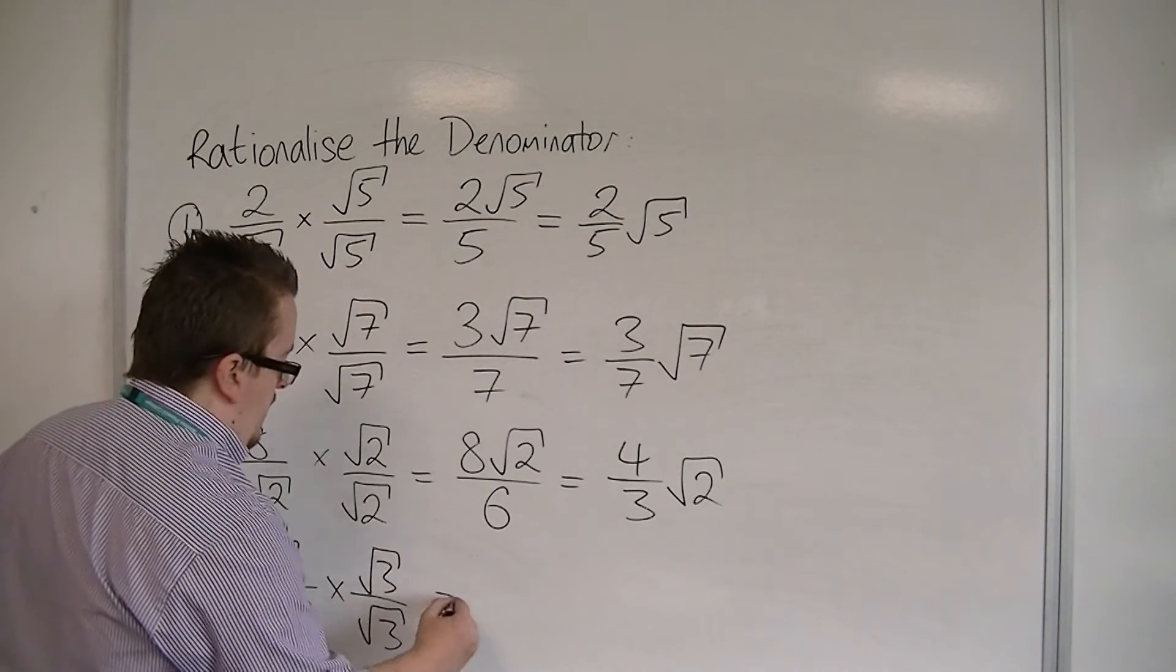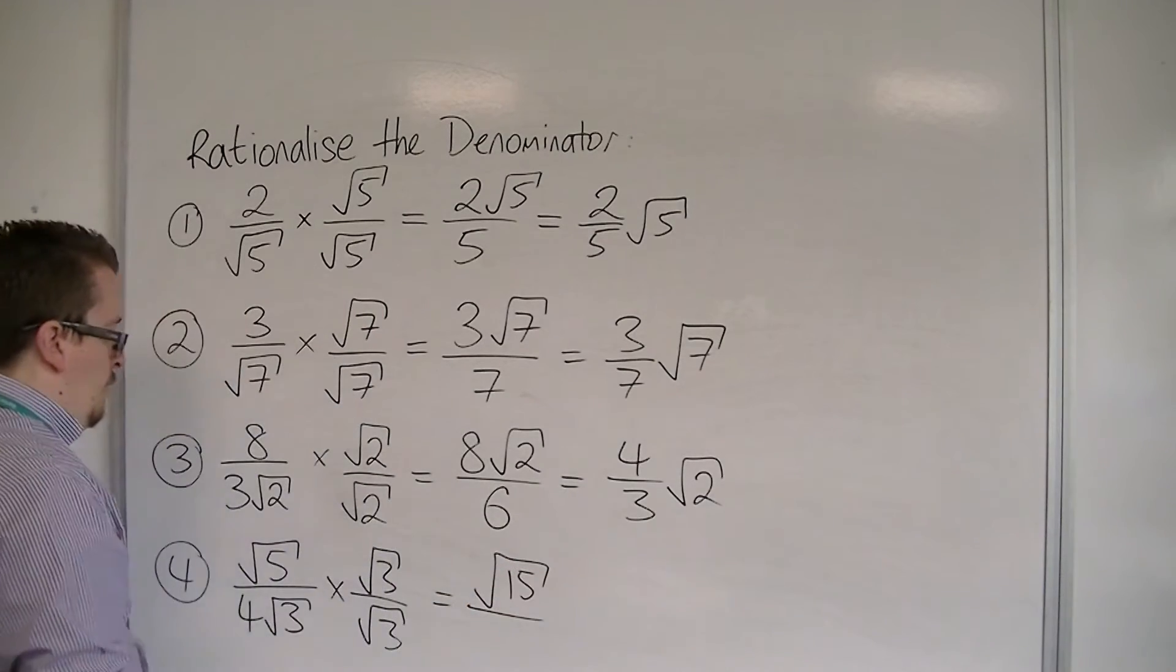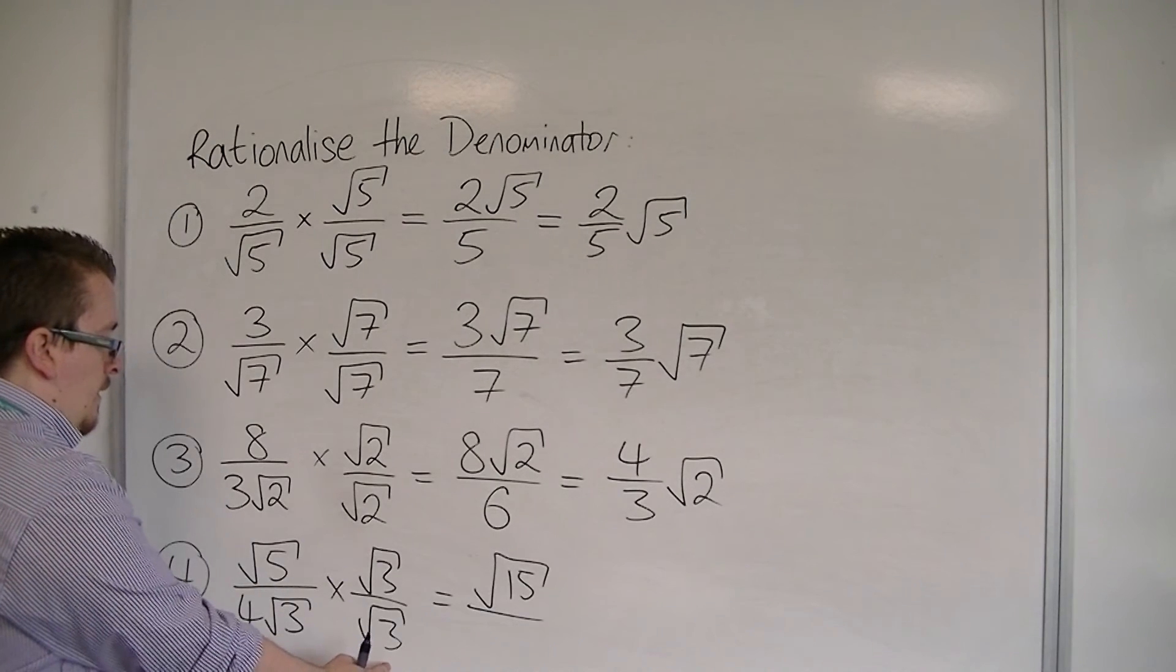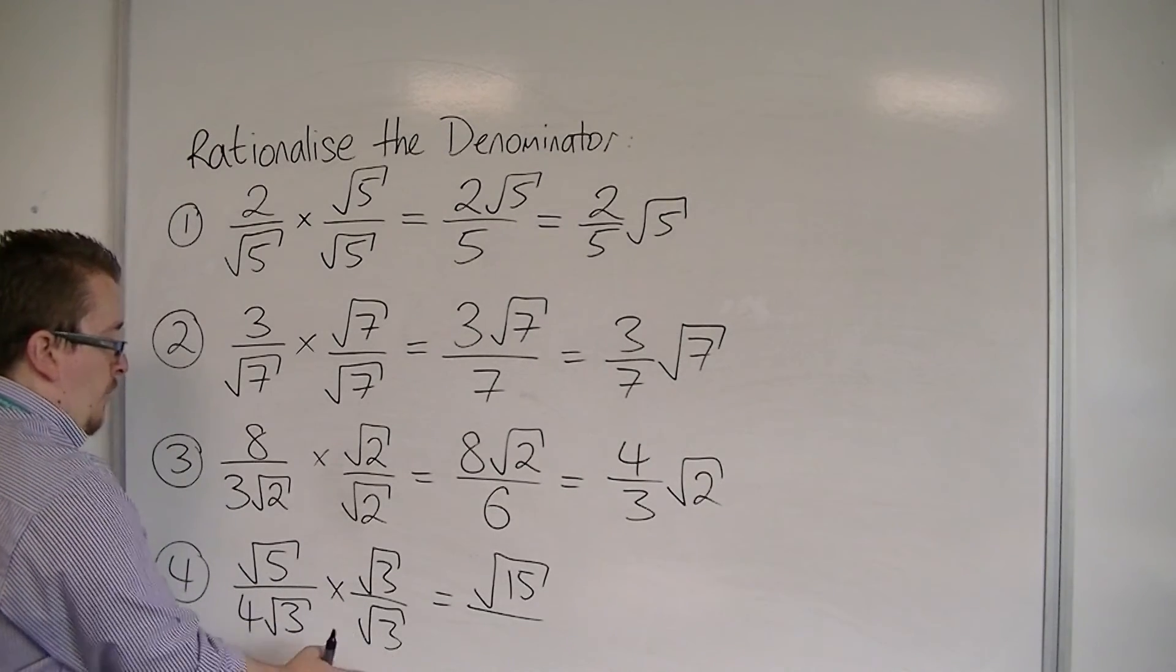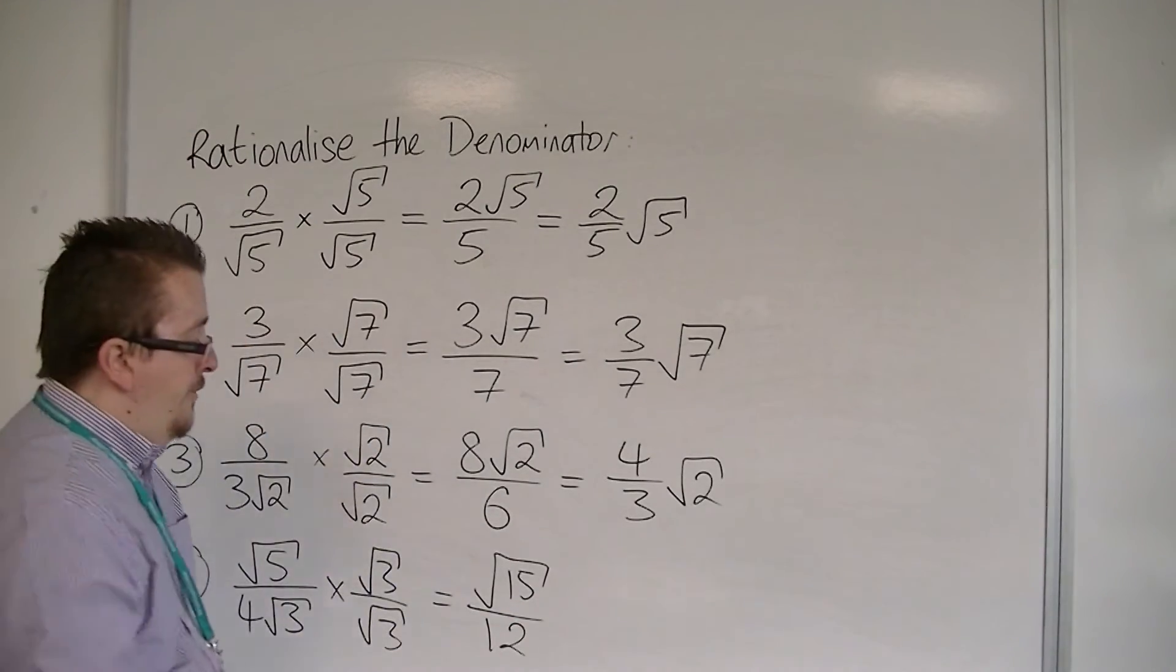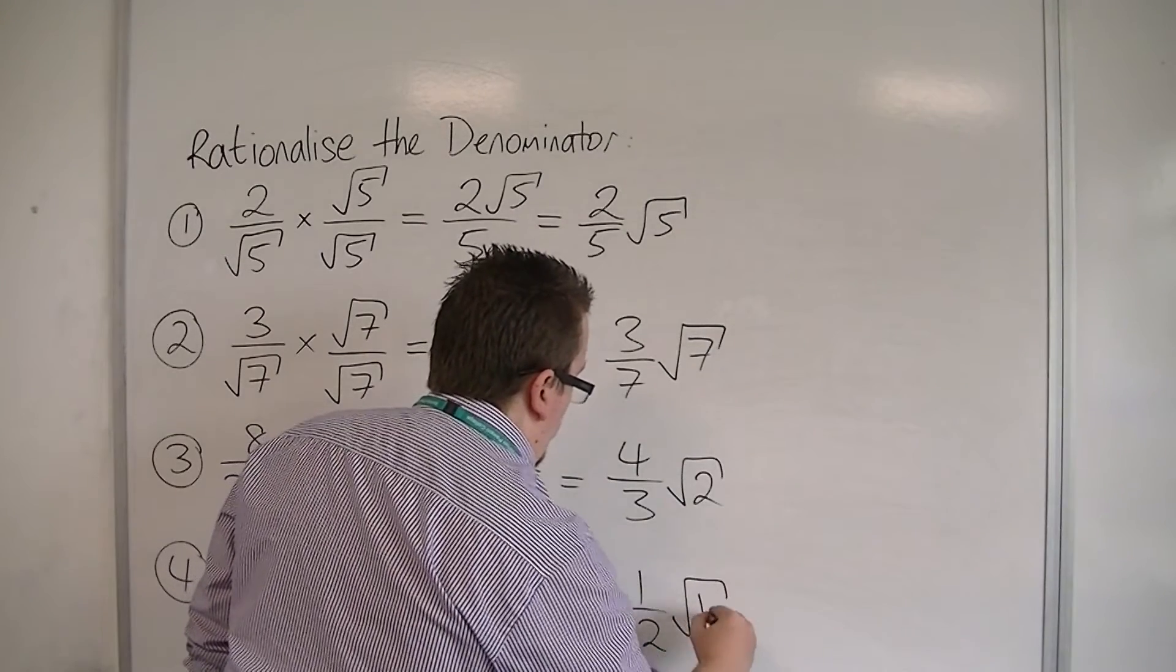Root 5 times root 3 is root 15, over 4 root 3 times root 3, which will be root 3 times root 3 is 3. So 4 times 3 is 12. I've got root 15 over 12, or 1 twelfth root 15.